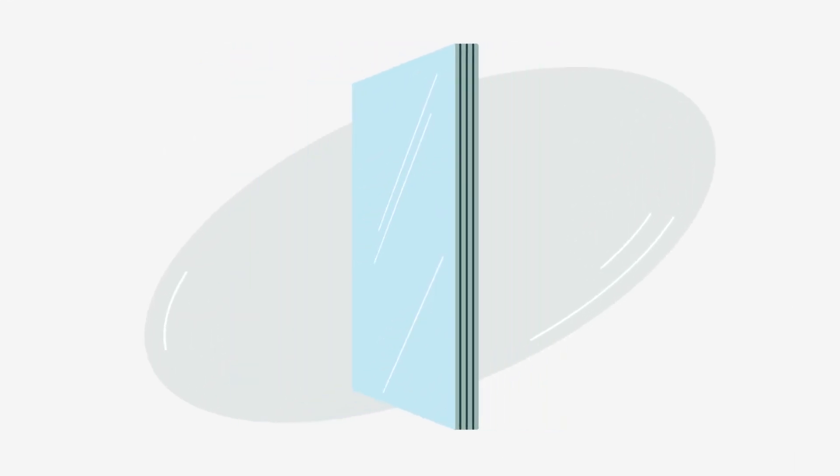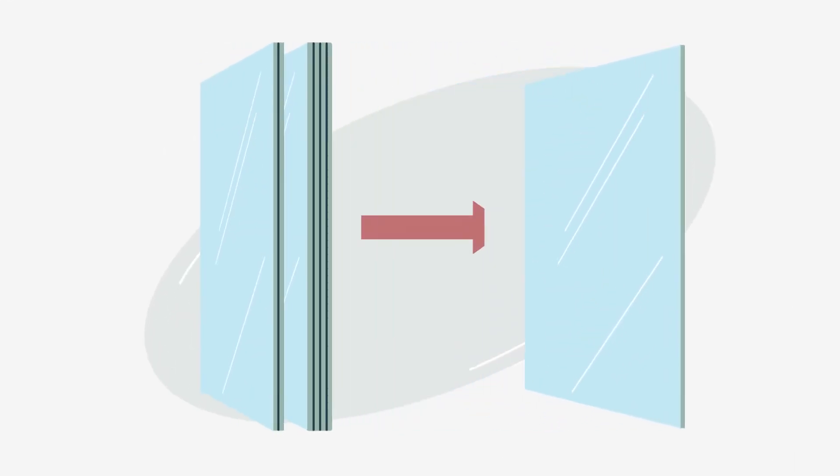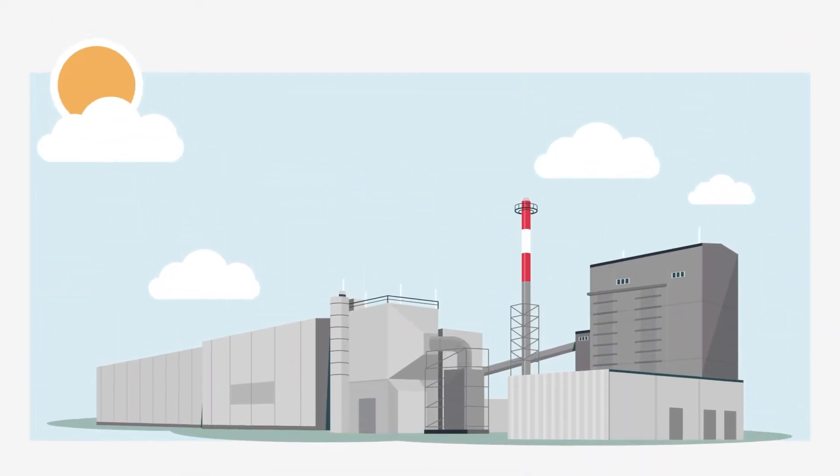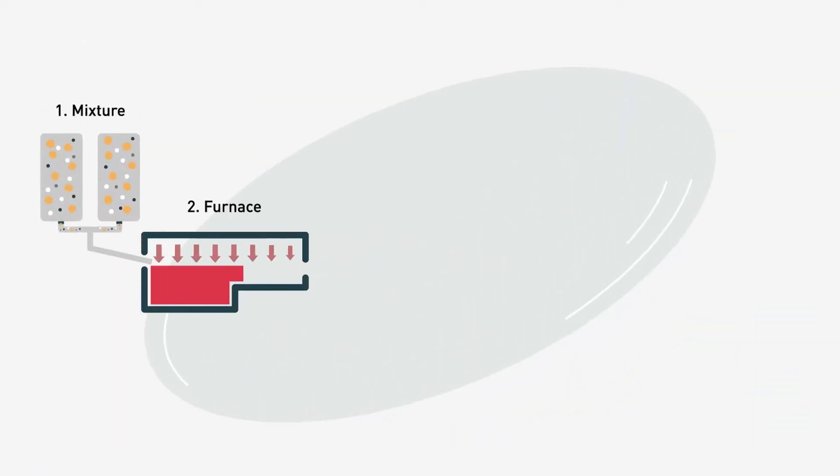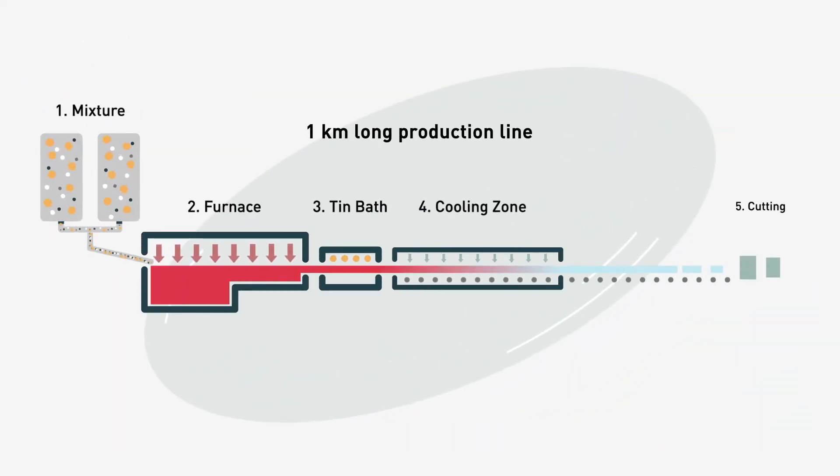Float Glass provides the basis for all Glass Trouche glass products, which we manufacture in high quality at our own float glass factories. Float Glass is manufactured in five steps.